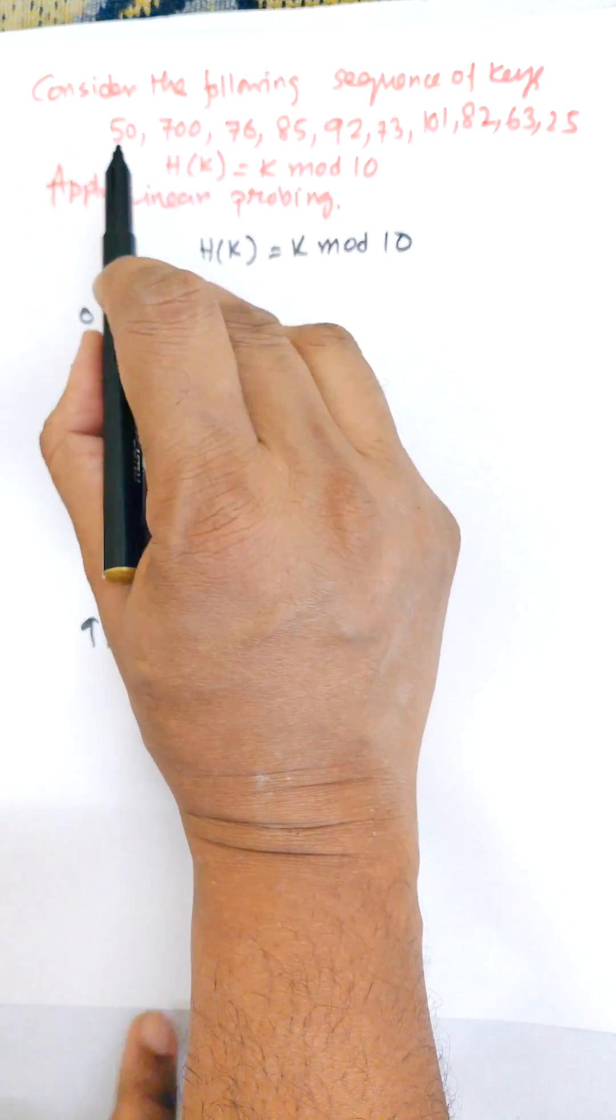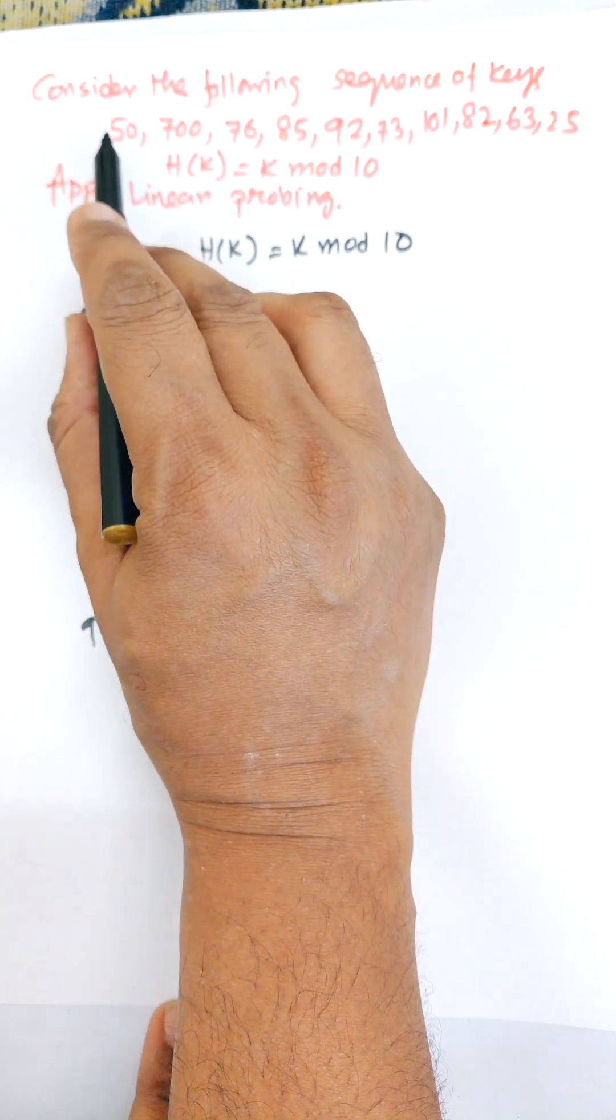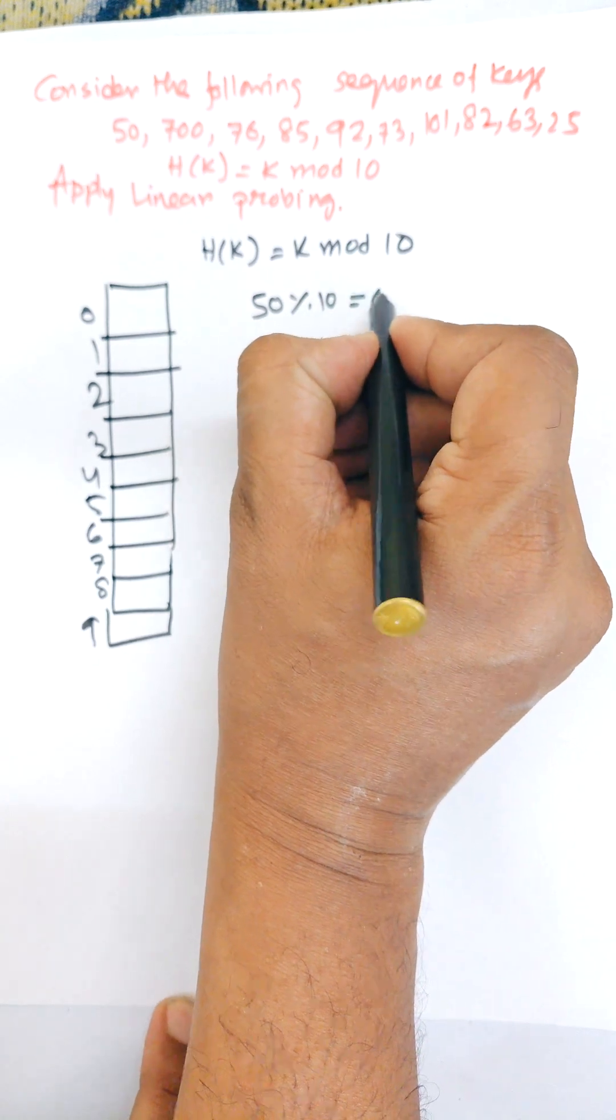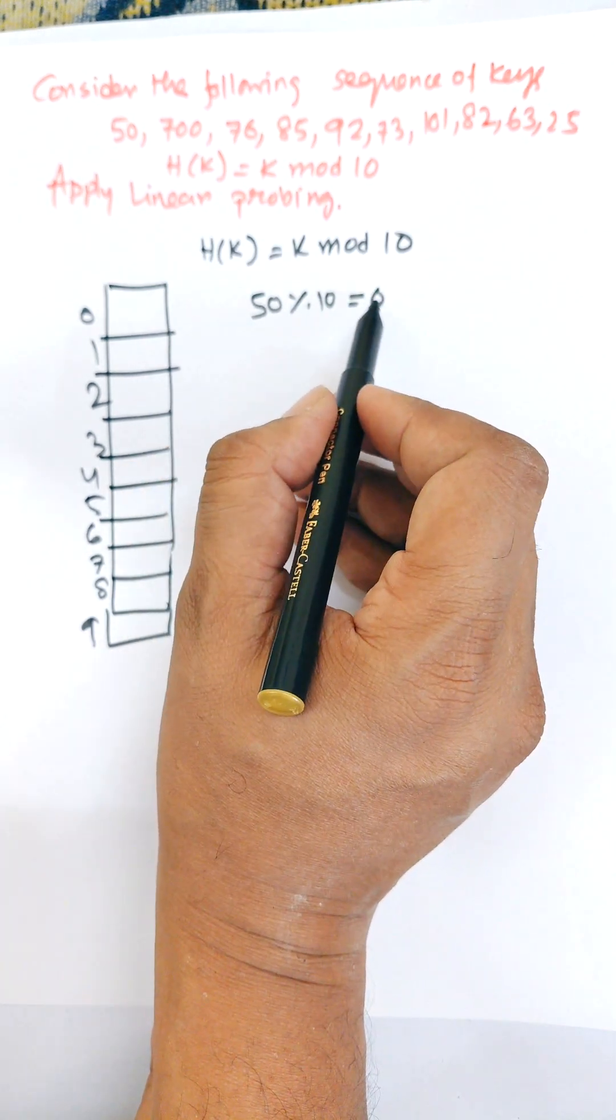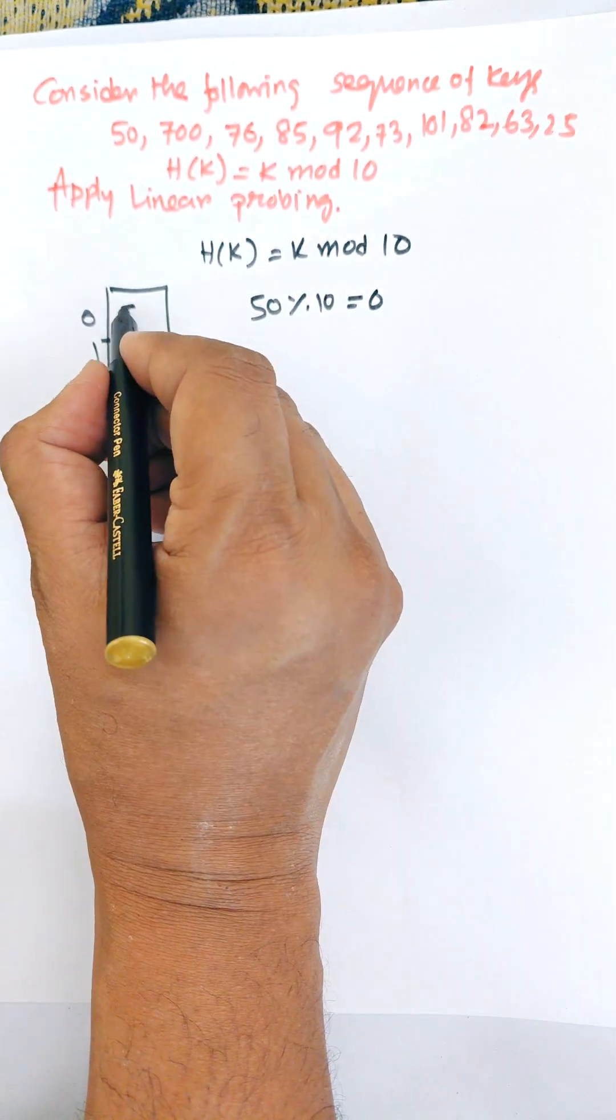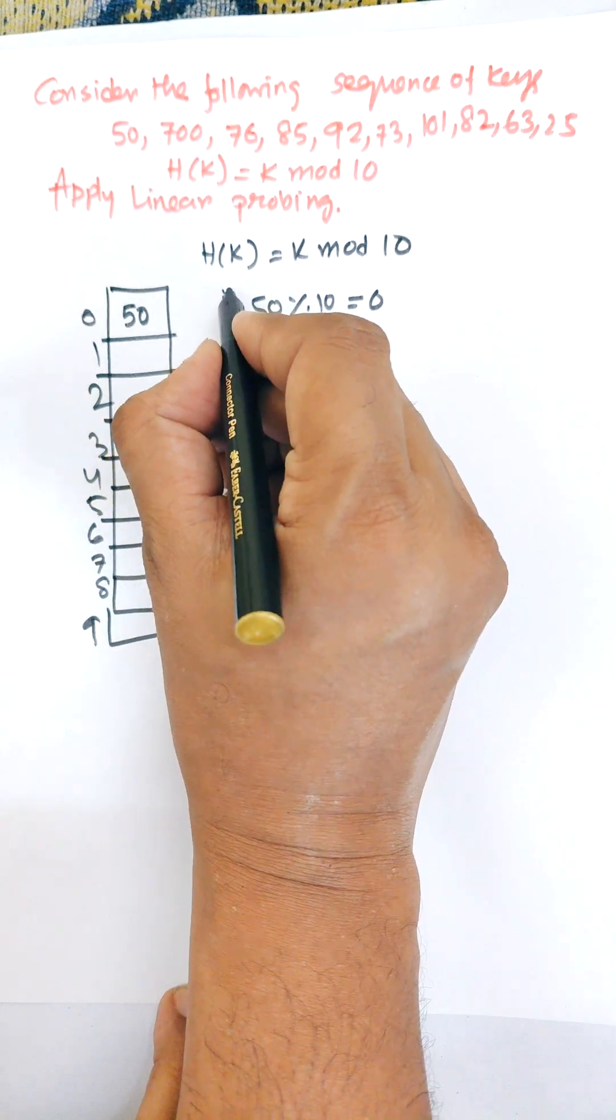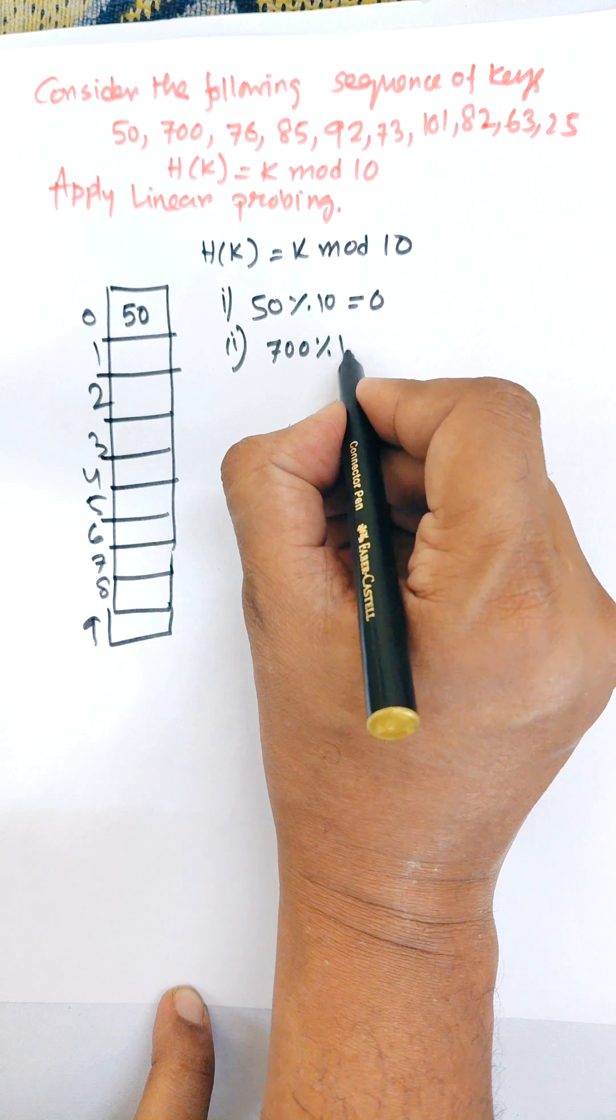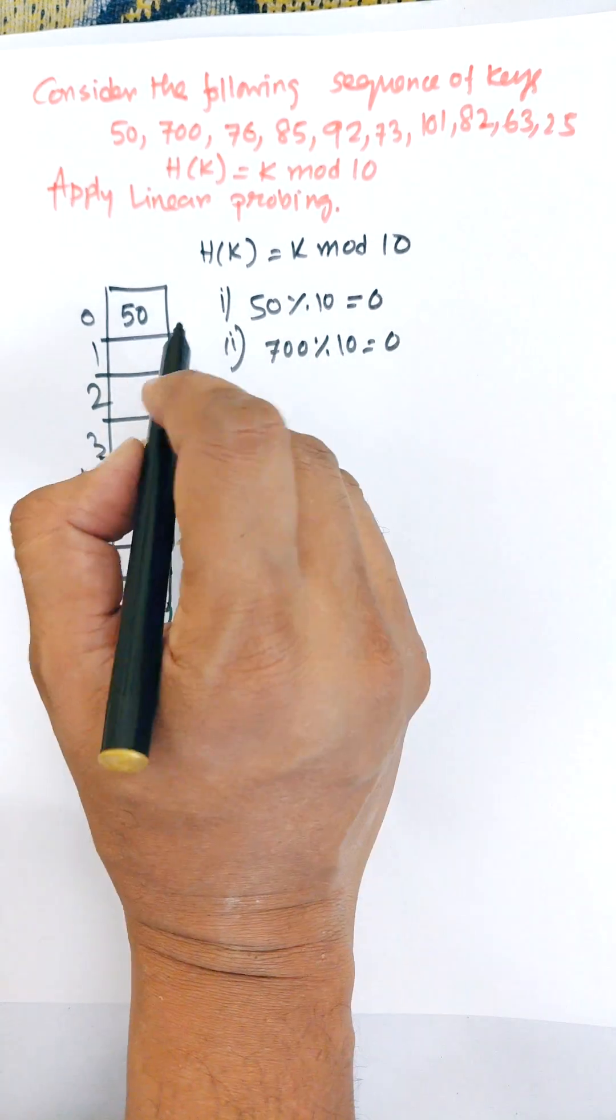Now we need to apply this hash function for every key. 50 mod 10 equals 0, so it will allocate memory location 0. Now the second one is 700 mod 10, which also equals 0. The collision occurred.